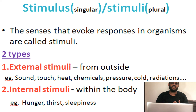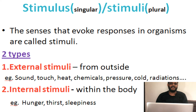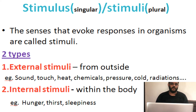We know that for the working of the eye we need light. Without light we cannot see anything. Similarly, for the working of the ear we need sound, and for the working of the tongue we need taste. All these things which help in the working of sense organs are known as the stimulus. Examples of stimulus include touch, sound, light, and taste. This stimulus we can classify into two different types.